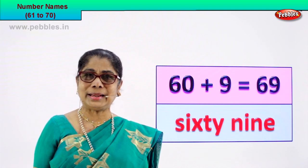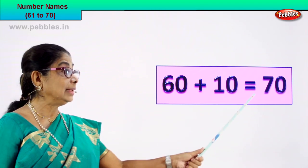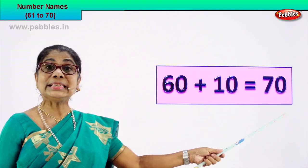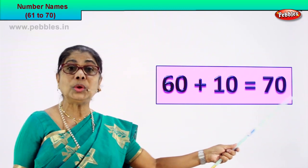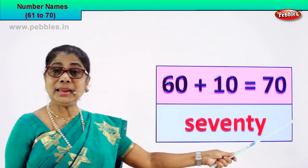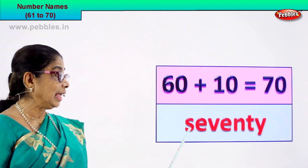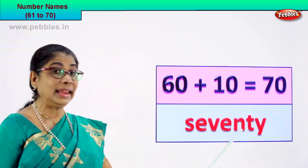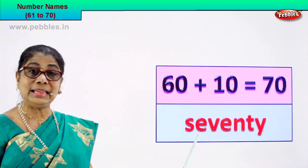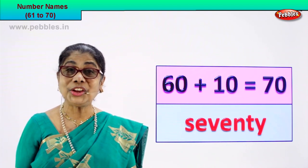Shall we take our next number? Okay! Look! 60 plus 10 is equal to 70. 7 and 0, 70. That's the numeral. How do we write the name of this numeral 70? S-E-V-E-N-T-Y. 70 is the numeral and its name is S-E-V-E-N-T-Y, seventy.